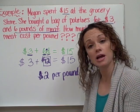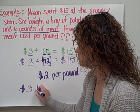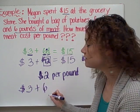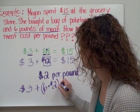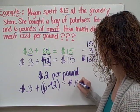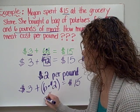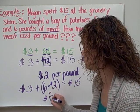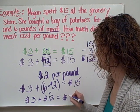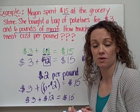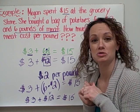To check myself, I can plug the number right in and rewrite the problem: $3 for potatoes plus 6 pounds of meat at $2 a pound equals $15 altogether. A few different steps, but if you take your time and think carefully, you'll be able to solve problems just like this.